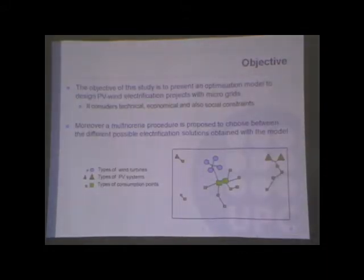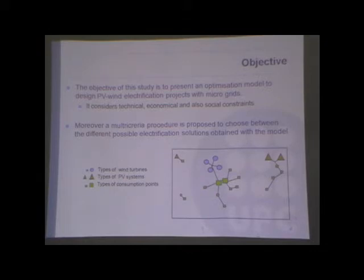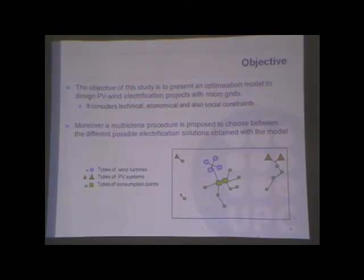The objective of this study is to present an optimization model to design PV-wind electrification projects, considering the existence of microgrids and also taking into account technical, economical, and social constraints. With this model we can obtain several solutions, and to choose between these solutions we need a multi-criteria process.